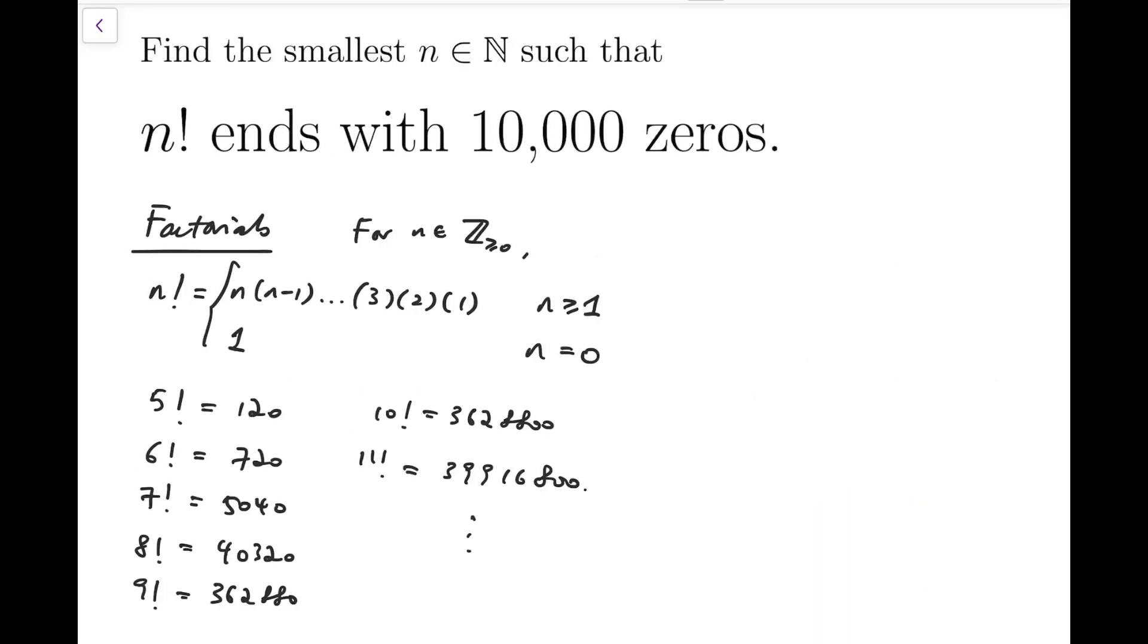We define n factorial as follows. For non-negative integers n, if n is 0, then the factorial is 1. Or if n is at least 1, so that means natural numbers, then we multiply all natural numbers from 1, 2, 3, all the way up to n.